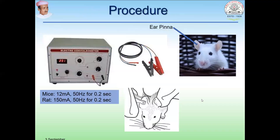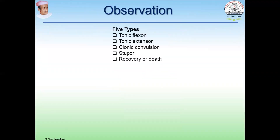You can divide the animals into two groups, each group containing five to six animals. One group is considered as control and another group receives the drug such as phenytoin. Carry out this process for each animal and make observations. There are five types of observations mainly observed in this test: first is tonic flexion, then tonic extensor, then clonic convulsion, then stupor, and finally recovery or death of the animal.